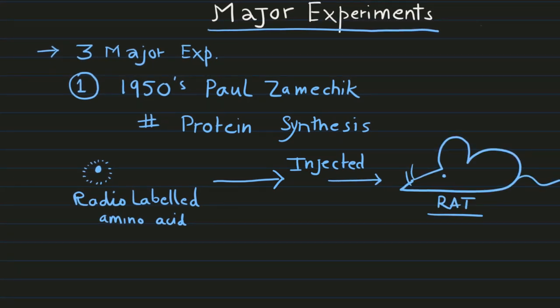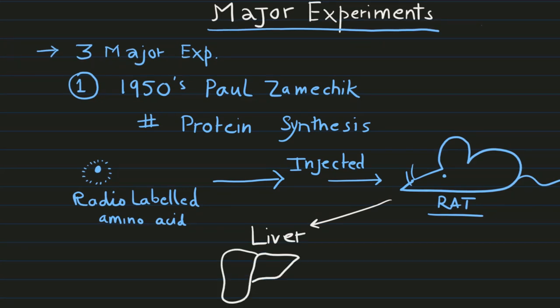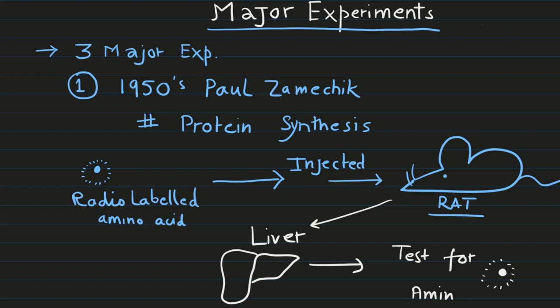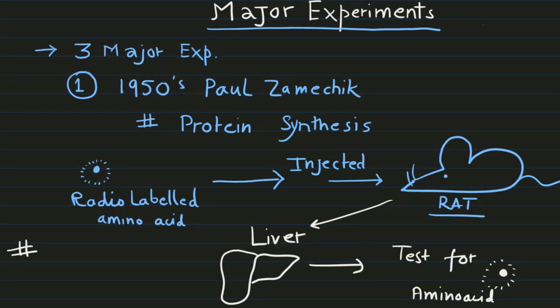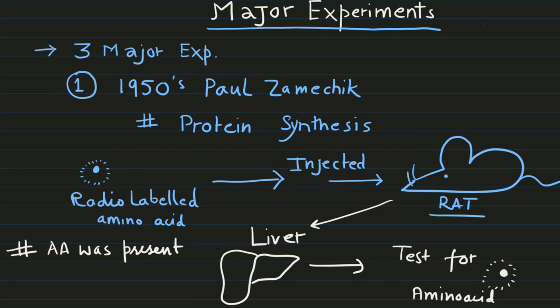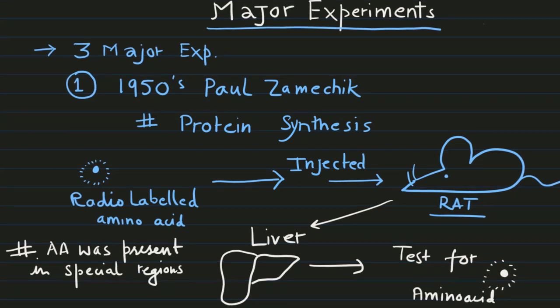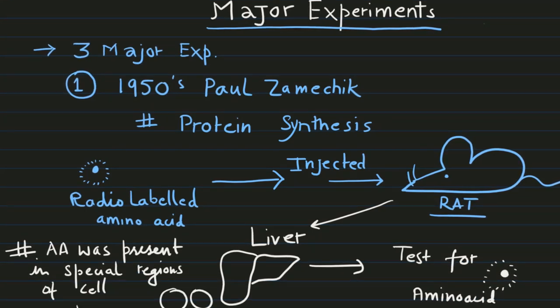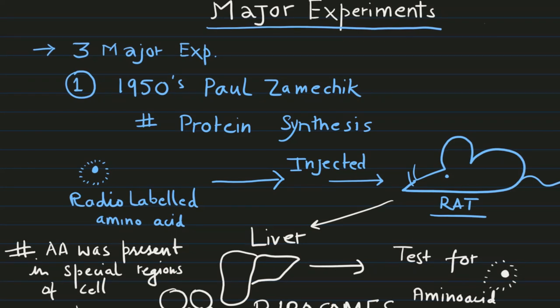After injection, he took the liver of the animal out and tested it for radio-labeled amino acids. He found those amino acids were present in specialized areas inside the cell. Immediately after injection, within minutes, those areas were identified as ribosomes.